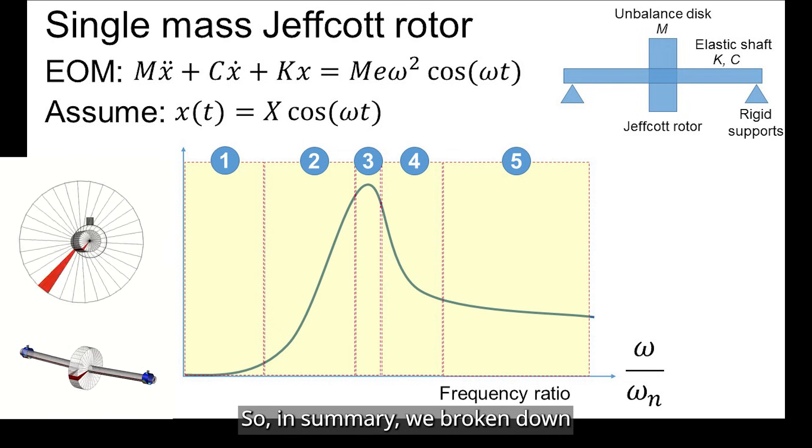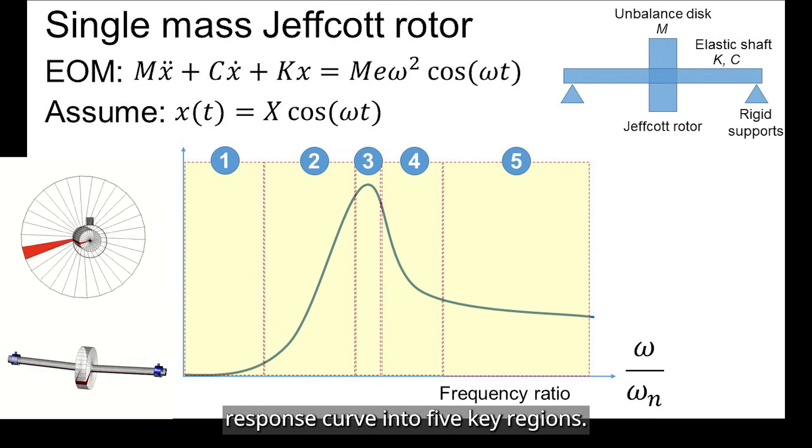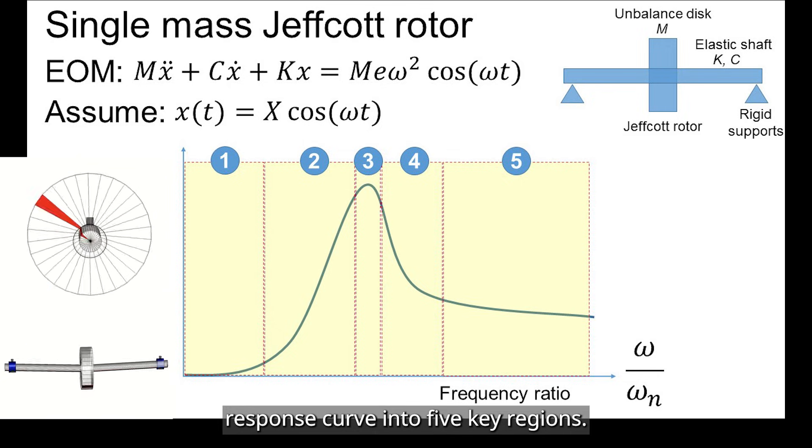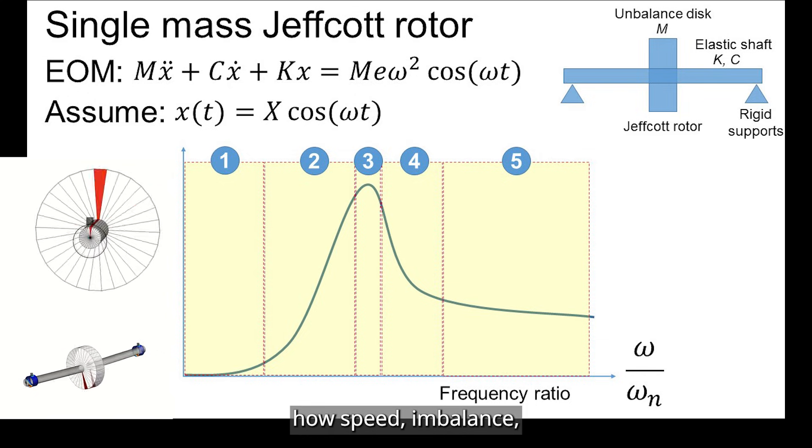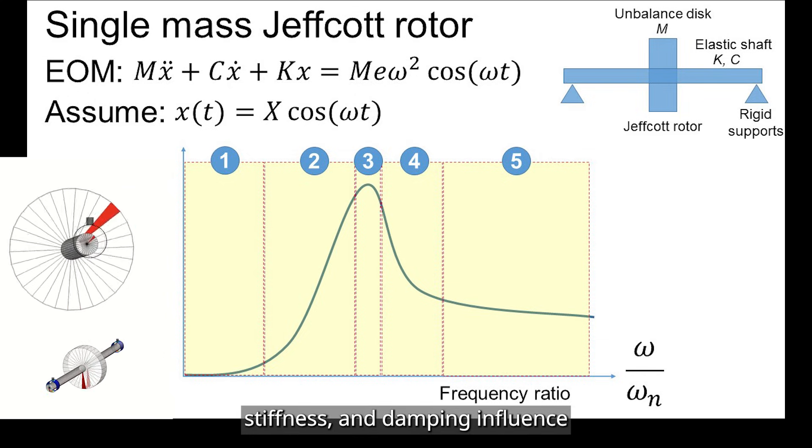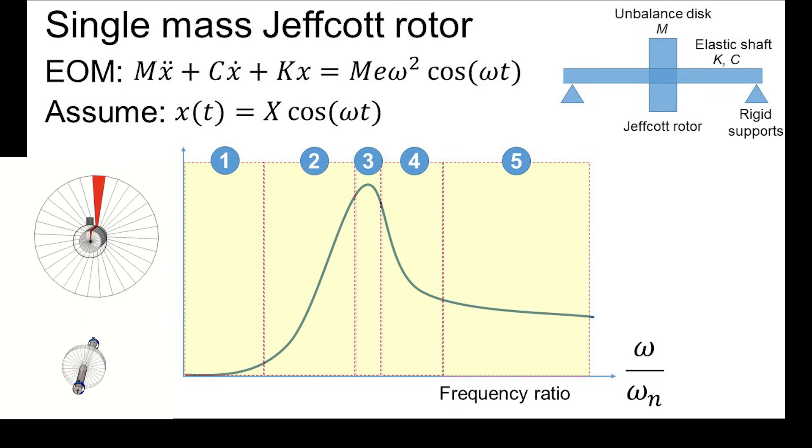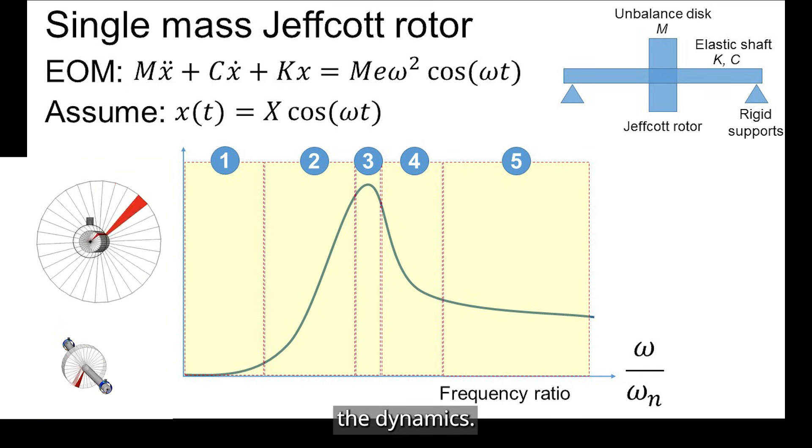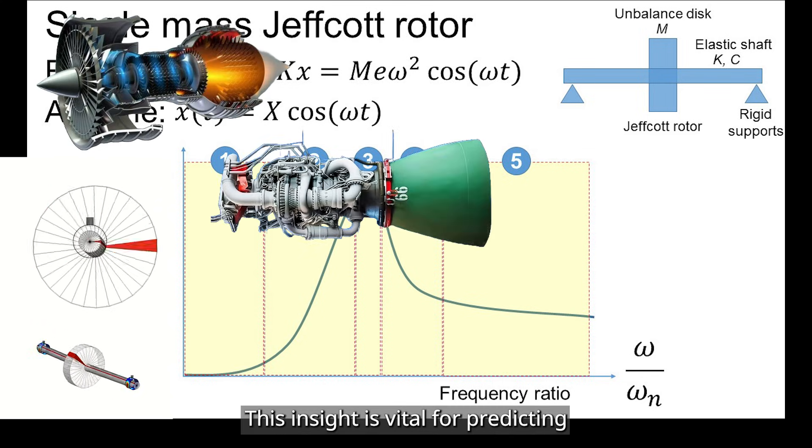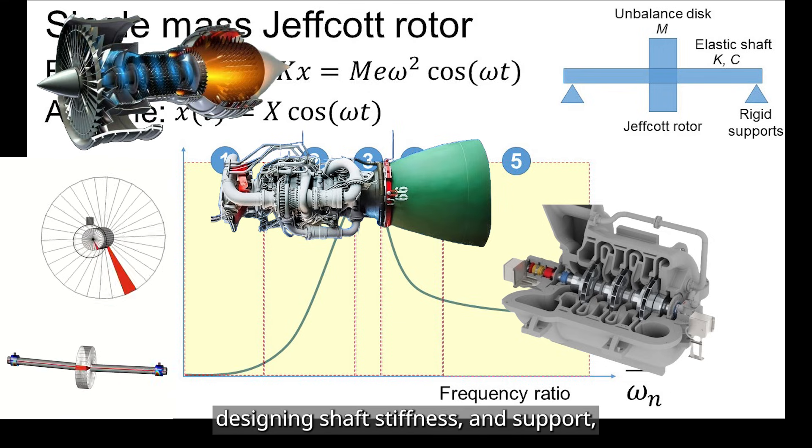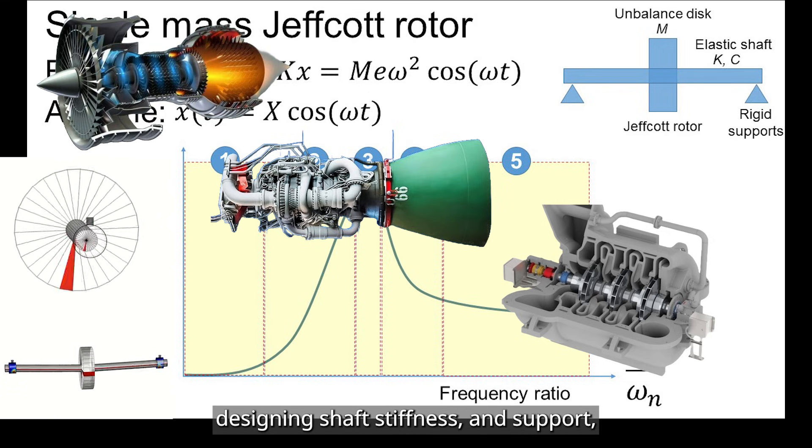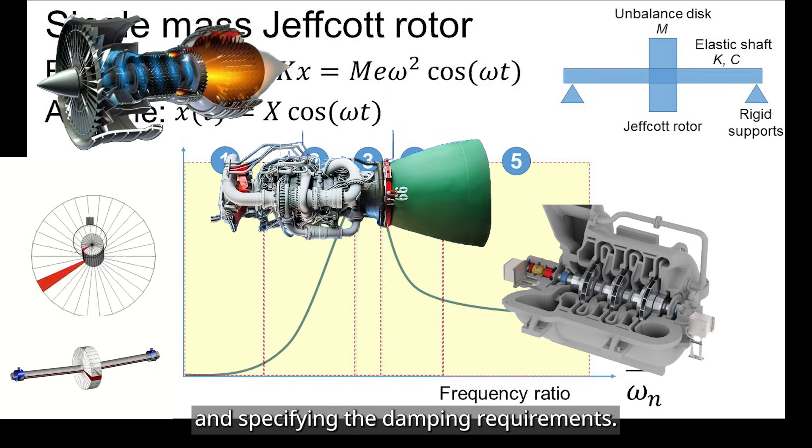So, in summary, we've broken down the rotor response curve into five key regions. Each reveals how speed, imbalance, stiffness, and damping influence the dynamics. This insight is vital for predicting natural frequencies, designing shaft stiffness and support, and specifying the damping requirements.